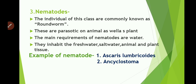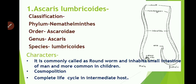Nematoda: individuals of this class are commonly known as roundworms. These are parasitic on animals as well as plants. They are found in every ecological condition. The main requirement of these nematodes is water; they inhabit fresh water, salt water, animal and plant tissues. Examples of nematodes are Ascaris lumbricoides and Ancylostoma. We are going to discuss only about Ascaris lumbricoides. Its classification: phylum is Nemathelminthes; order is Ascaridida; genus is Ascaris; species is lumbricoides.